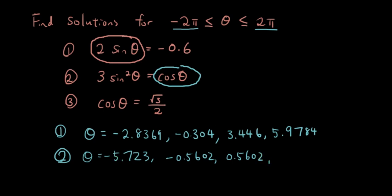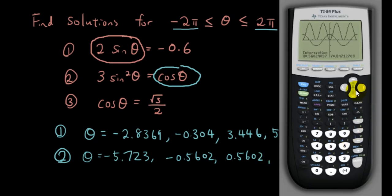And the last one is, second trace, intersects, go to the right. 5.7229.